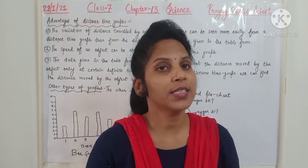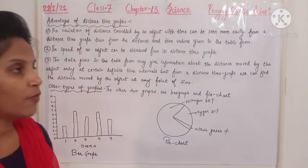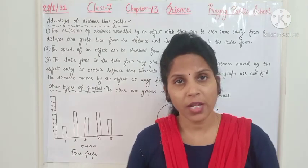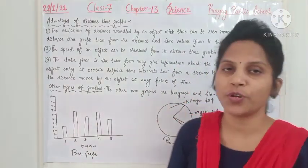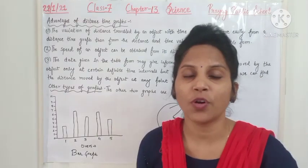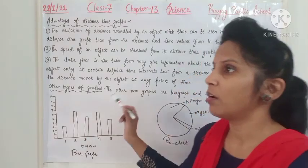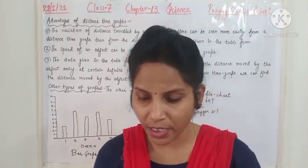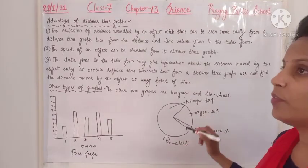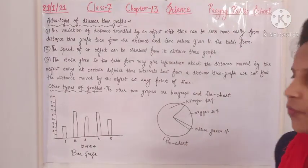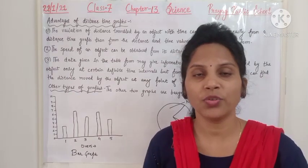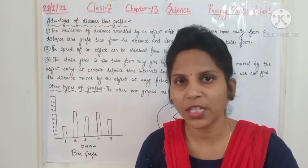Distance-time graphs are also called linear graphs. There are two other types of graphs commonly used in mathematics: bar graphs and pie charts. Bar graphs have bars drawn on graph paper. In a pie chart, the whole circle is taken as 100 percent and sections are shown differently. For example, the pie chart of the composition of air shows nitrogen at 78 percent, oxygen at 21 percent, and other gases at 1 percent.